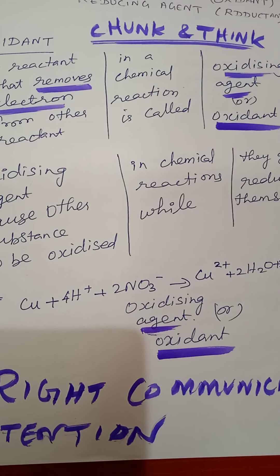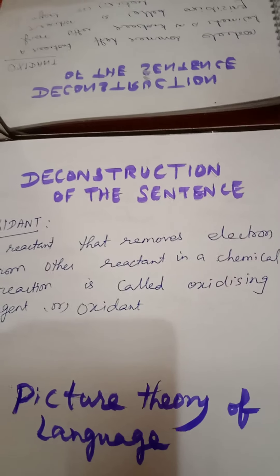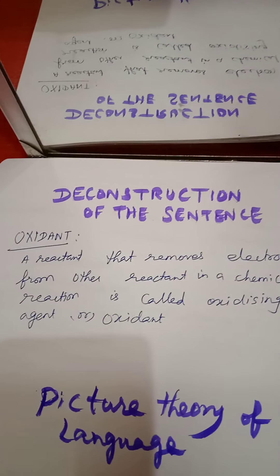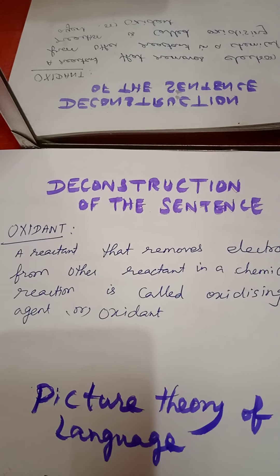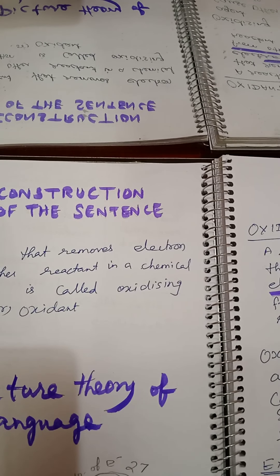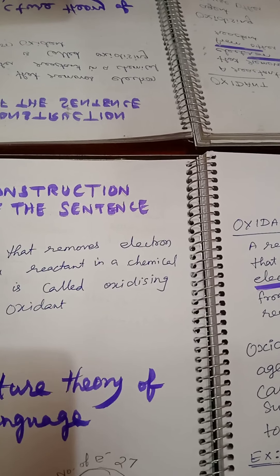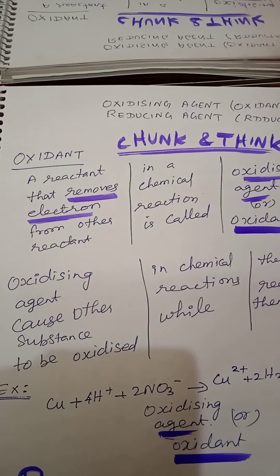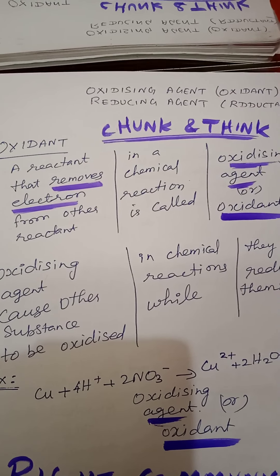When they say sentences, deconstruction of the sentence. If we say a sentence — a reaction that removes electrons from other reactants in a chemical reaction is called oxidizing agents — we can deconstruct this sentence. That's why we can chunk this sentence.